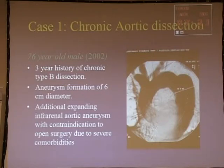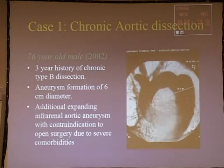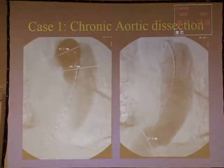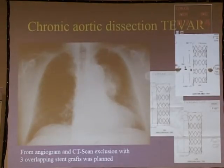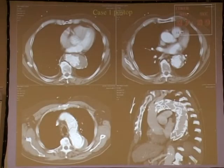The first case: an older patient with a chronic dissection, three-year history of type B dissection, and due to his comorbidities nobody wanted to do open surgery. Despite the big diameter of even the true lumen, we used three Medtronic grafts with oversizing to 45 millimeters, and we could completely exclude it and achieve false lumen thrombosis.